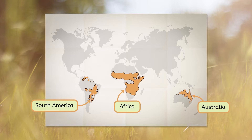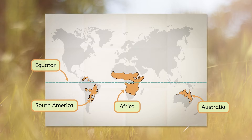Do you notice anything about the part of the globe where these areas are located? Yes, they're all very close to the equator! Remember how the ocean water is warmer along the equator? Well, the land around here is much warmer too! The savanna only has two seasons: the dry season and the wet season.